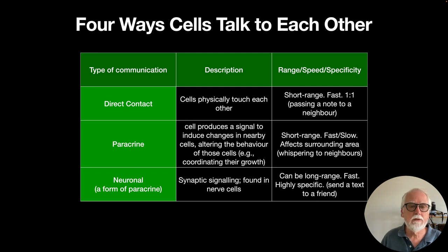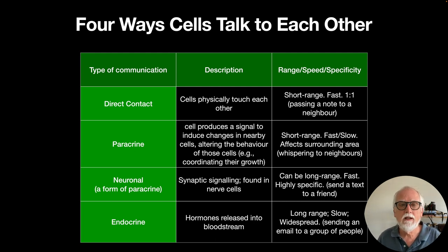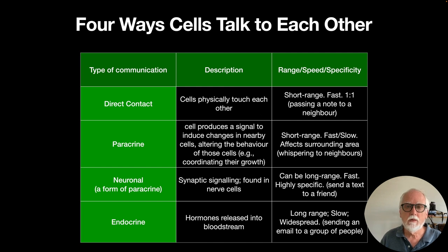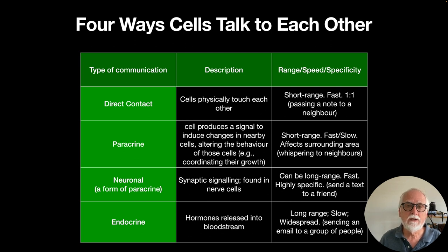Finally, there's the endocrine way: hormones are released into the bloodstream in a very diffuse fashion that goes throughout the entire body. This is long range because the blood goes everywhere, carrying hormones all over the body. It's a very slow way of communicating between cells and is not really specific — it's like sending an email to a group of people. This fourth type is what this lecture focuses on.